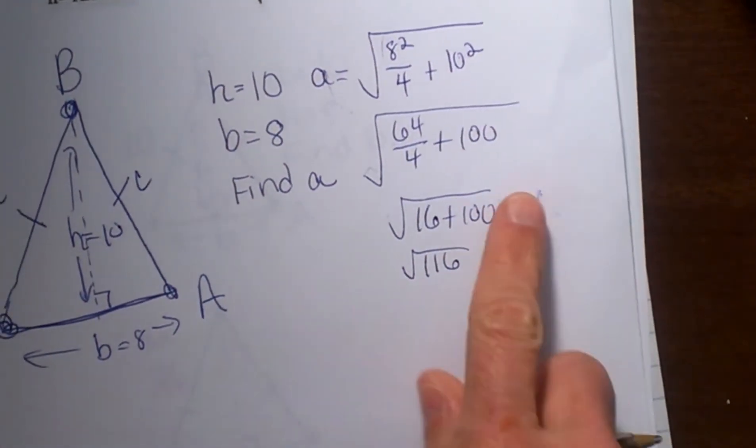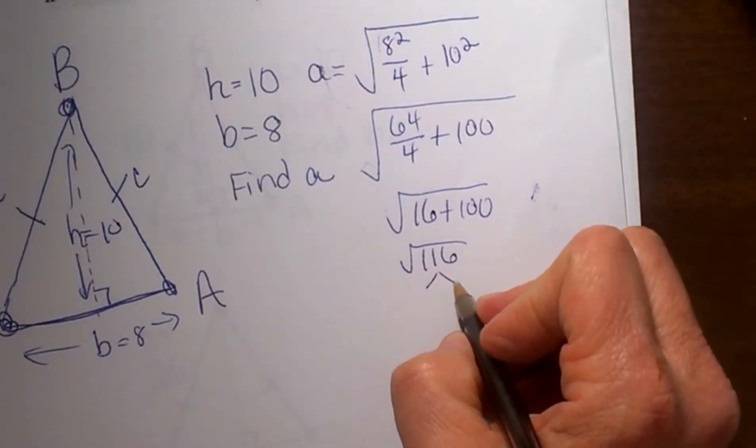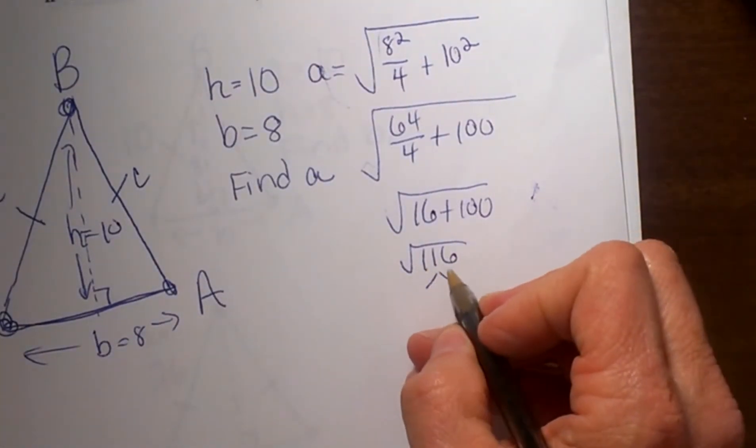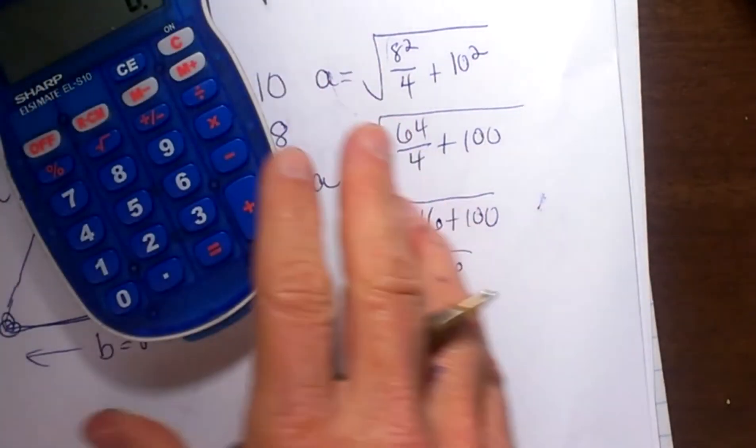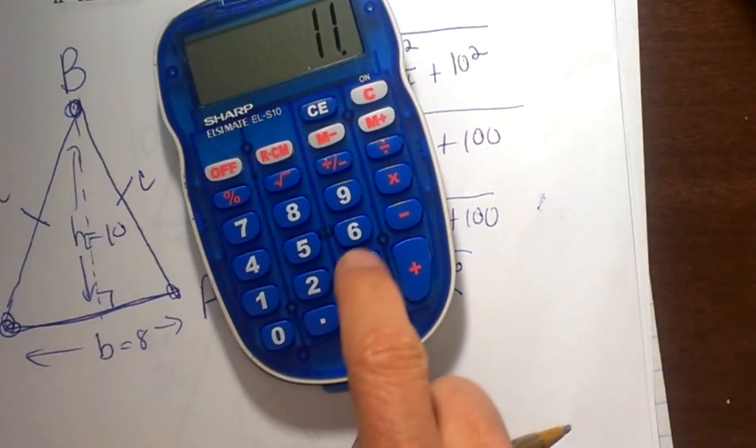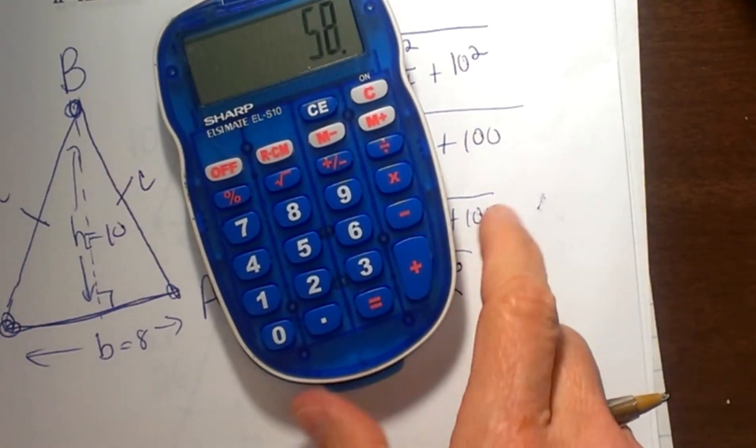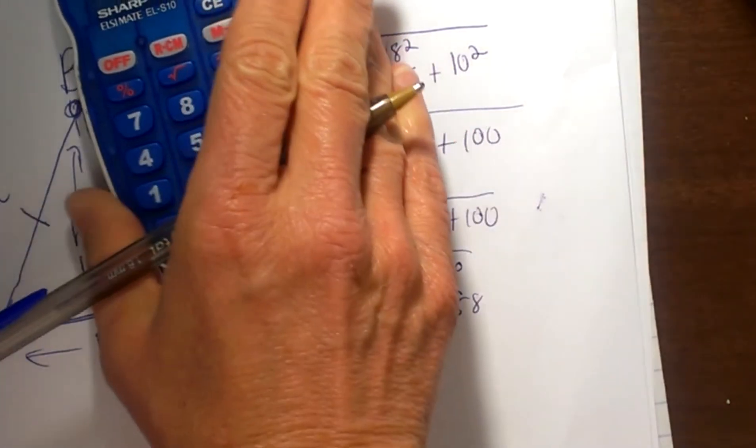That's my answer under the radical. I can write that as a decimal, but typically we simplify the radical. So I'll divide 116 by 2, which gives me 58. 58 is even, so let's divide that by 2 again, which gives me 29 times 2.